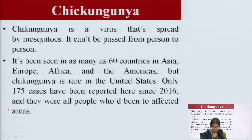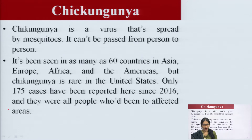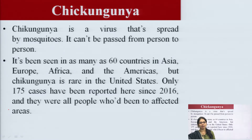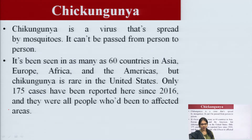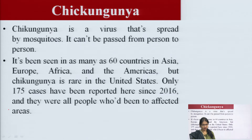Chikungunya is a mosquito-borne viral disease transmitted to humans by an alpha virus, spread by the infected Aedes aegypti and Aedes albopictus. The Chikungunya virus is a member of the alpha virus family, belonging to the family Togaviridae, and was first isolated in 1953 in Tanzania.